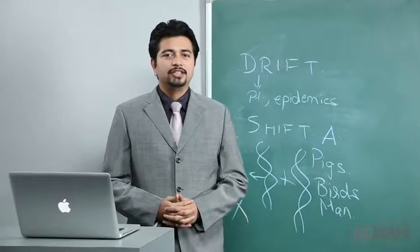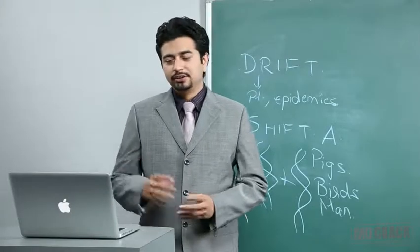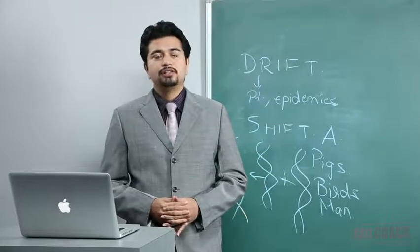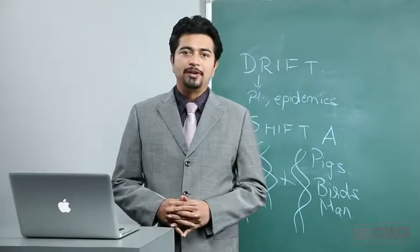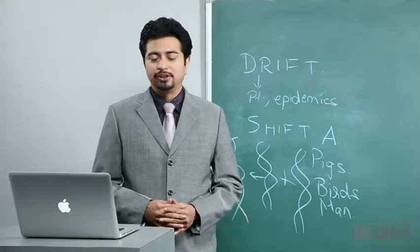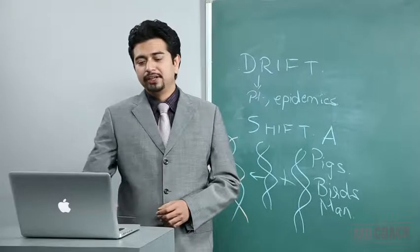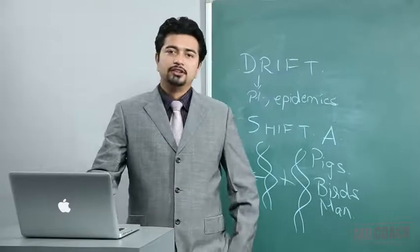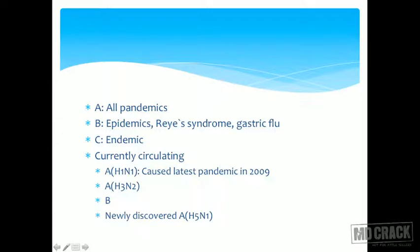Since we know about antigenic drifts and shifts, we can see that influenza A causes all the pandemics, B can cause epidemics, and C is endemic. Additionally, B is associated with disproportionate cases of Reye's syndrome and gastric flu. Gastric flu refers to the presence of gastric symptoms, so out of A, B, and C, only B can cause gastric symptoms — hence the name gastric flu.